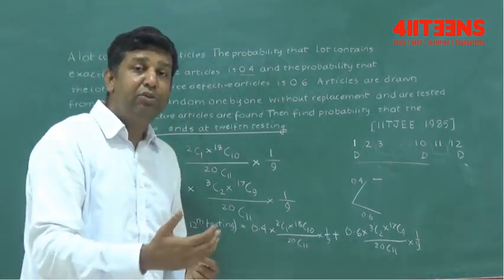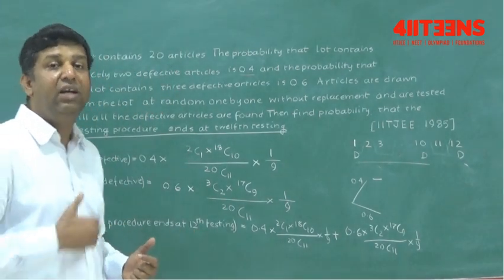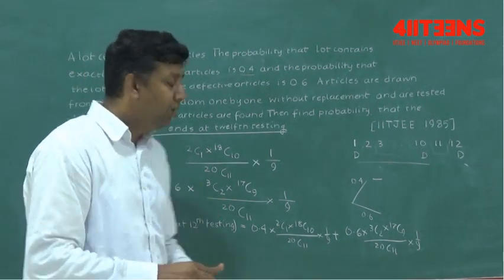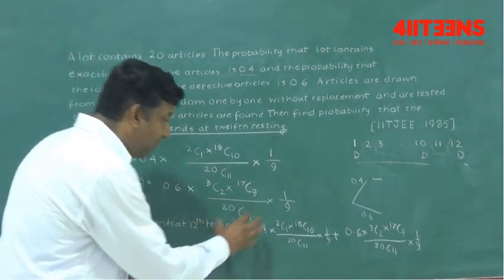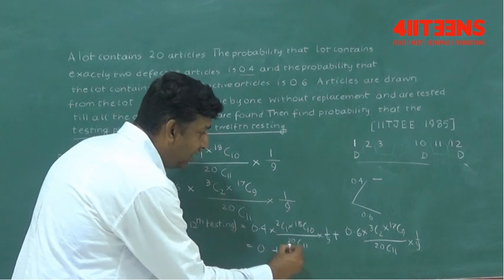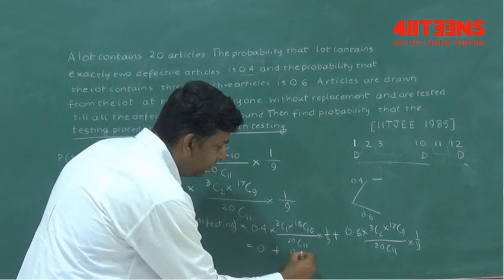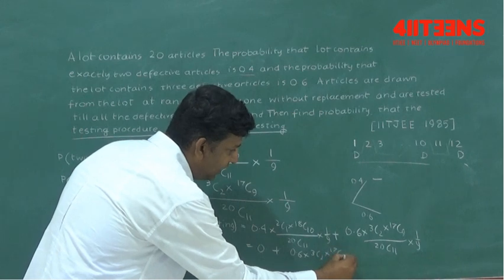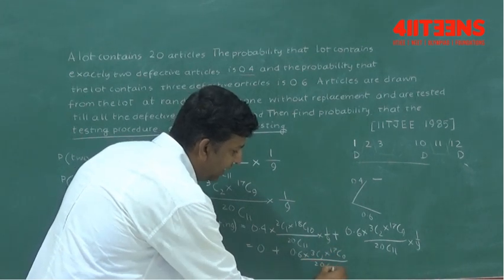The reason is that there is another statement, another thing—there are some bags which contain 3 defective. So when you're choosing, when you're testing, you will always try to find the third one. So the probability for this particular case will be 0. And only the left out will be 0.6 into 3C2 into 17C9 divided by 20C11 into 1 by 9.